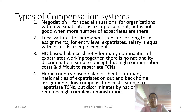We will start this class with types of compensation systems. The different types are: negotiation, localization, headquarter-based balance sheet, and home country-based balance sheet. Negotiation is a type where, in subsidiaries with few expatriates, the compensation is negotiated with the expatriates and then decided. It is a simple concept but cannot be applied when there is a larger number of expatriates in the subsidiary.